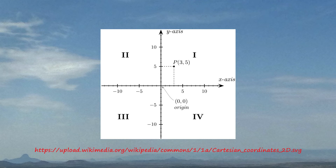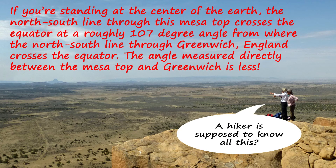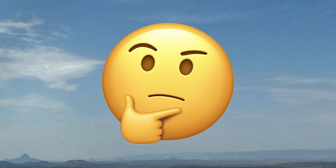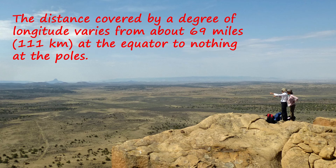On a graph, any x values left of the origin and any y values below the origin are negative. In the same way, any longitude values west of the zero-zero point and any latitude values south of that point are negative. If you're standing at the center of the Earth, the mesa top we're trying to pinpoint is at an angle of roughly 35 degrees north of the equator. Also, the north-south line through the mesa top is roughly 107 degrees west of the north-south line through Greenwich, England. None of us live at the center of the Earth, so how do these angular measurements translate into units we actually use? For latitude, the answer is straightforward — one degree equals roughly 69 miles or 111 kilometers. But for longitude, those values only work at the equator. As you approach the north or south pole, the lines of longitude converge, and the angular measurements between those lines shrink to zero. In other words, for longitude, the degrees, minutes, and seconds don't translate into fixed distances on the surface of the Earth.